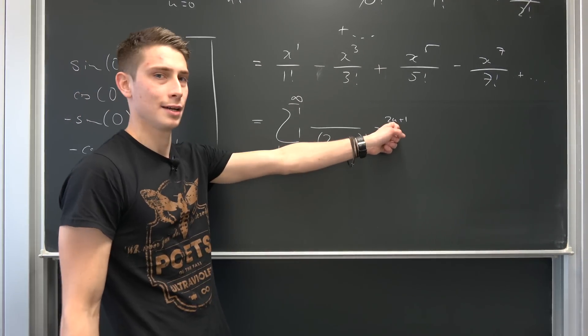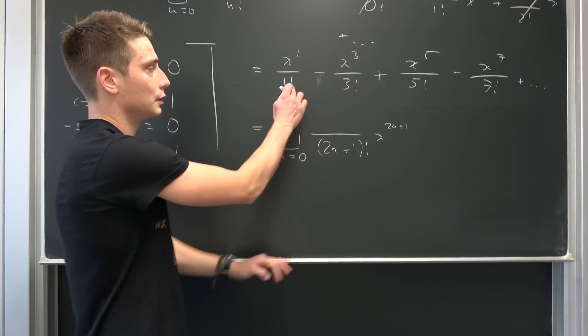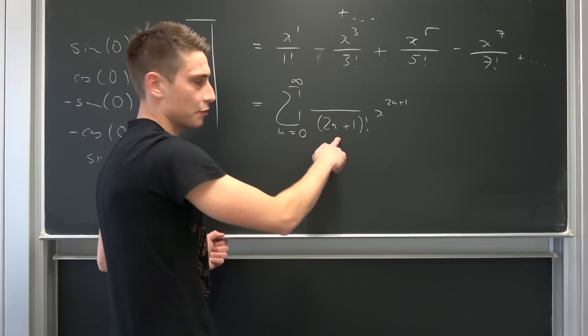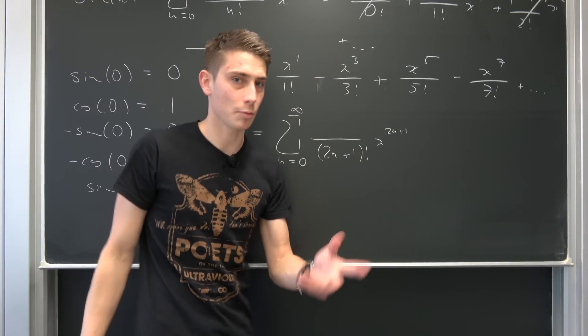This right here, if you plug one into here, this is x to the third power over three factorial in this case. But with a negative sign right here. So just like with the cosine, we have to have a negative one to the nth power up here.